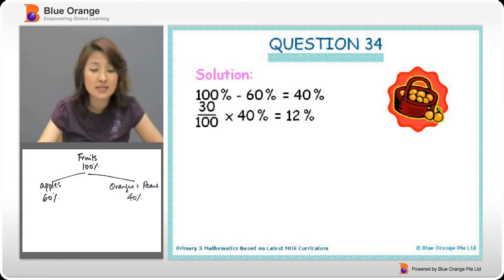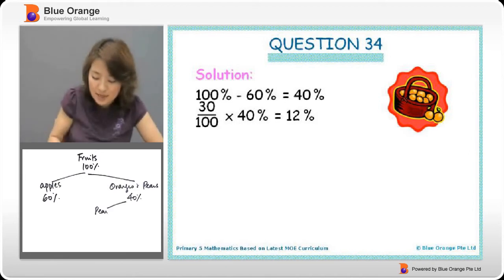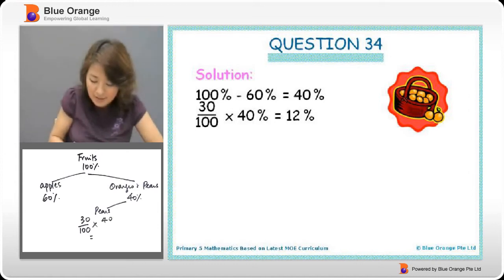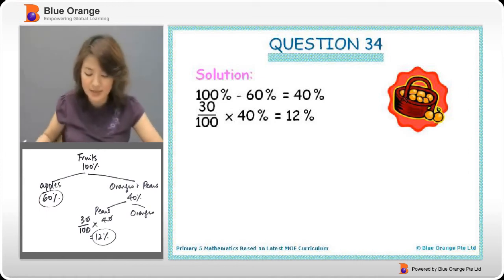Then of this 40%, we are going to split it into pears, which they say is 30% of the oranges and pears. So pears, 30% of the 40%, so we get 12%. So this is 60%, this is 12%. So the oranges will be 60 plus 12, 72.